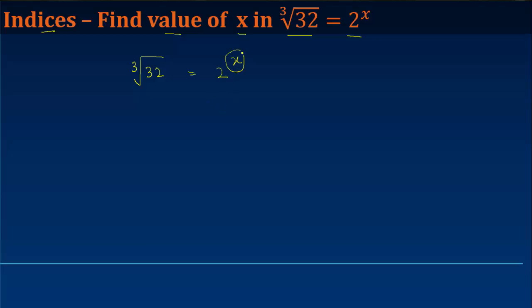Now, in order to find the value of x, what I need to do is I need to have the base over here equal to the base on the right side, which is 2. So, can I express 32 in a form such that it is like 2 to the power something? And how do I do that?